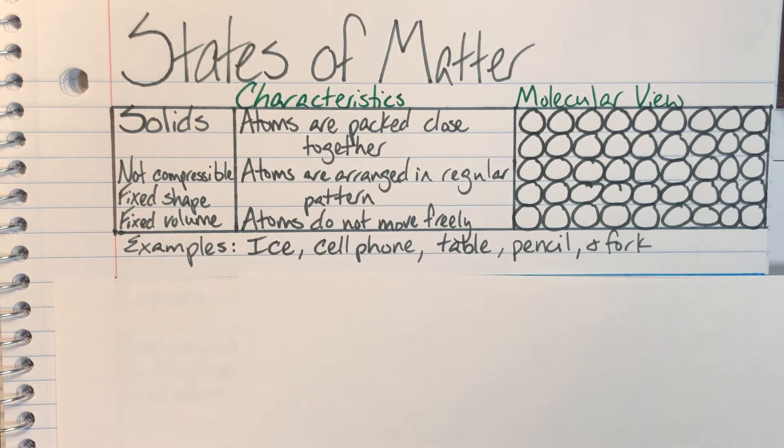Some examples of solids that you will run across in your everyday life: ice, your cell phone, a table, pencil, a fork. You can add as many things as you'd like to this list. The list will go on and on forever because solids are very common in our everyday life and they're very easy to identify.